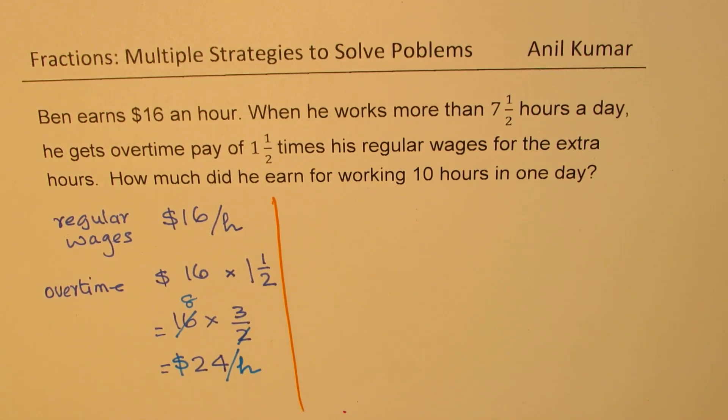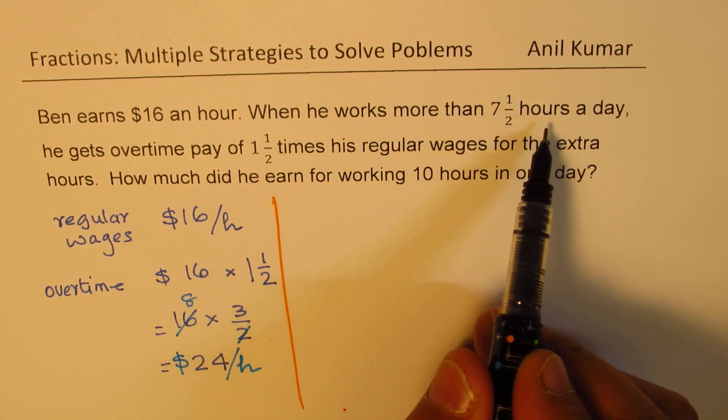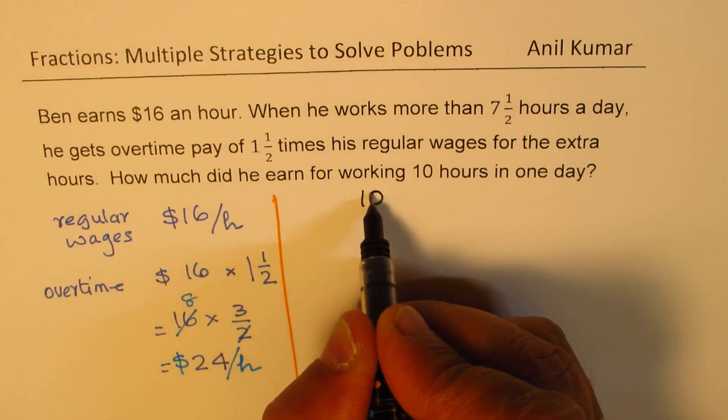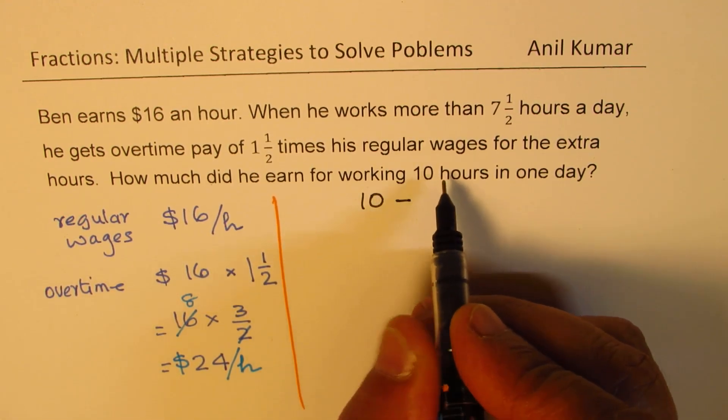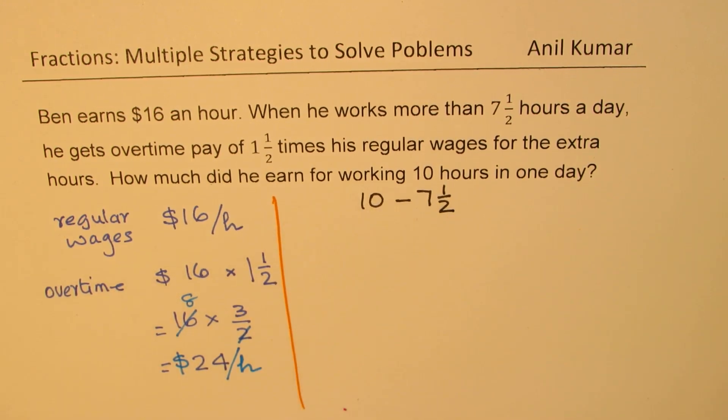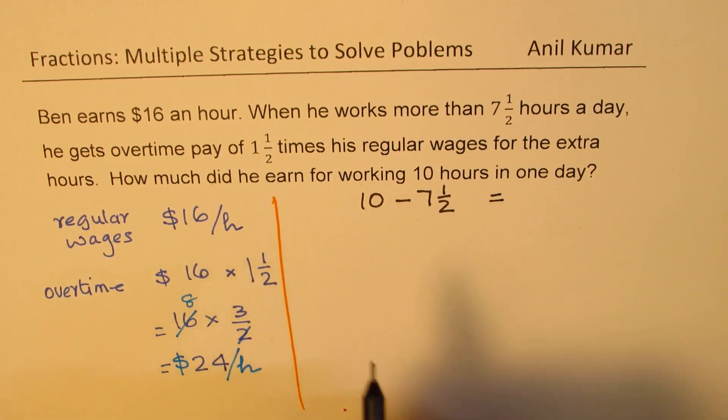Now we need to figure out how much did he earn for working 10 hours in one day. So when I am saying 10 hours and regular is 7 and a half hours, we have to figure out that from 10 hours, what is extra time? So 7 and a half we have to take away from 10 hours.